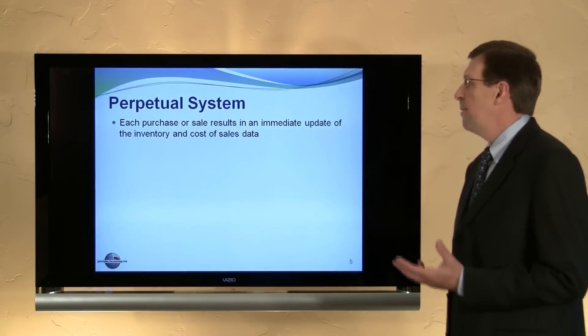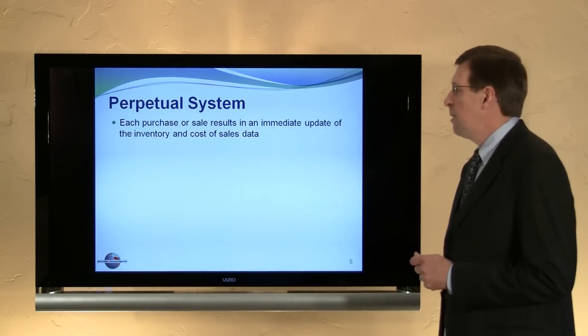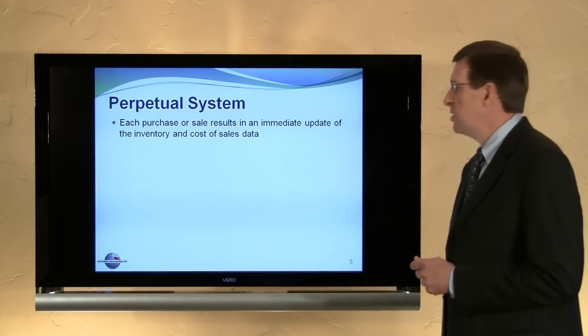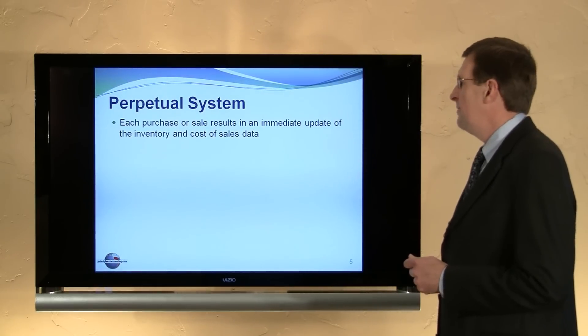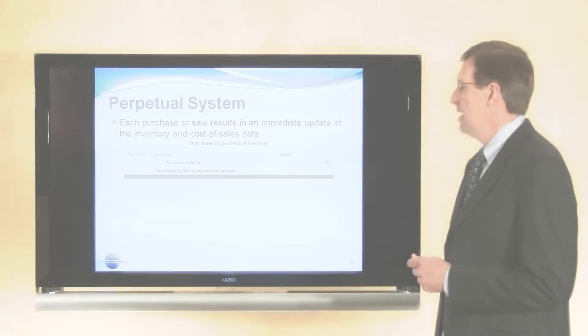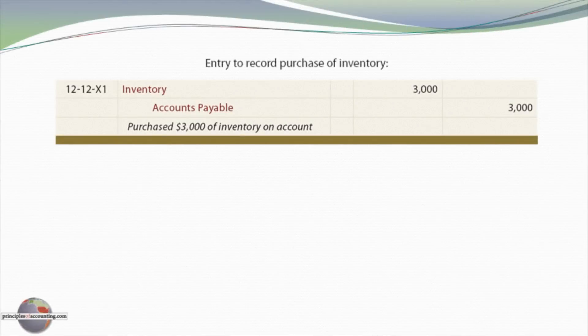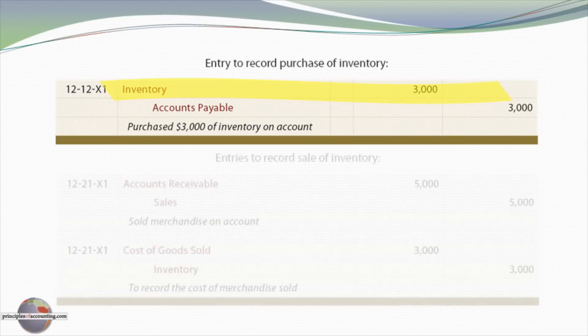With the perpetual system, as each purchase occurs or each sale occurs, there's an immediate update of the inventory and cost of sales data. So let's see what happens in terms of journal entries with the purchase of inventory. We debit inventory and we credit accounts payable as we buy goods. Nothing new there except we're debiting inventory rather than purchases.